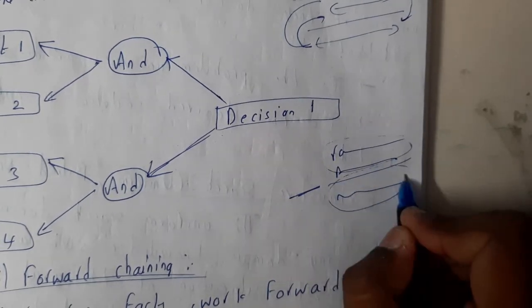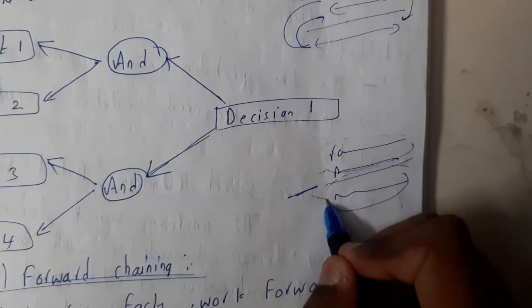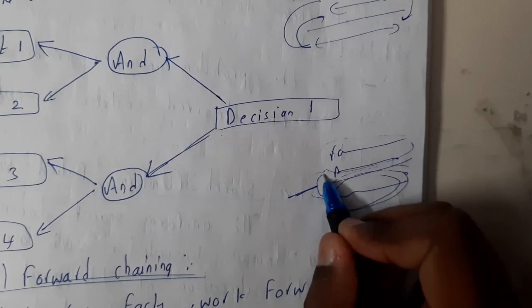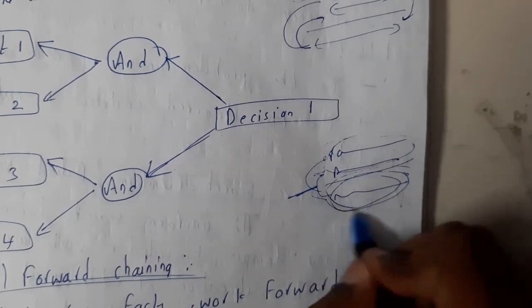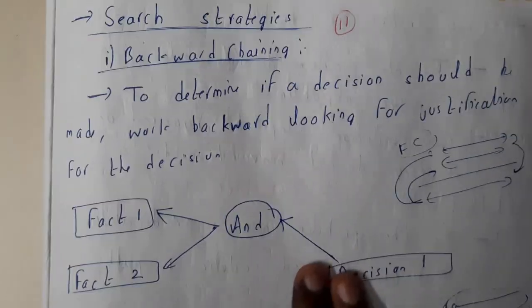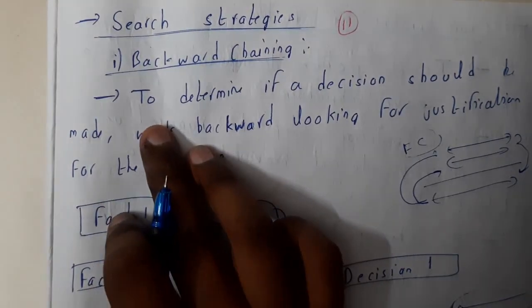And the result is Ramu is a good boy. So from these two we are concluding this. So this process is nothing but forward, whereas from this we are if we try to get these two things, then that is backward chaining.